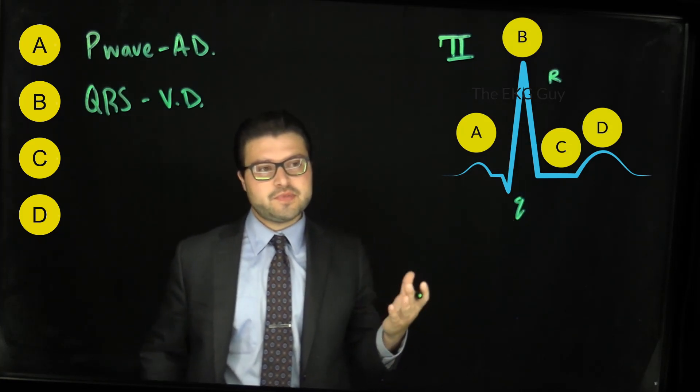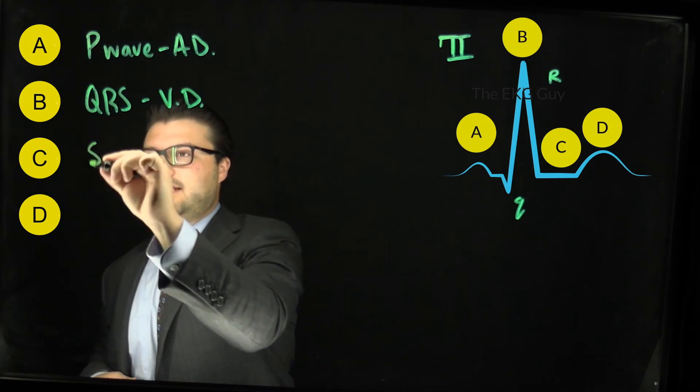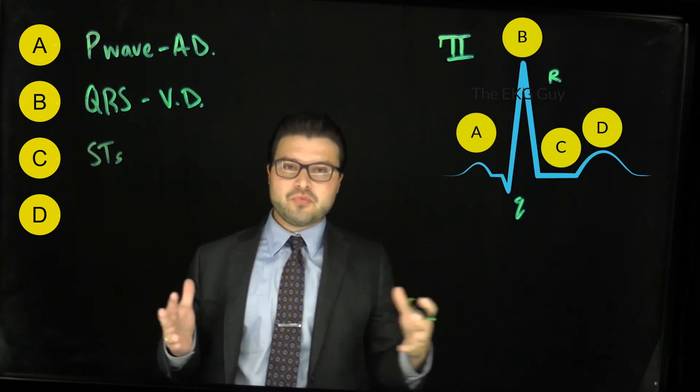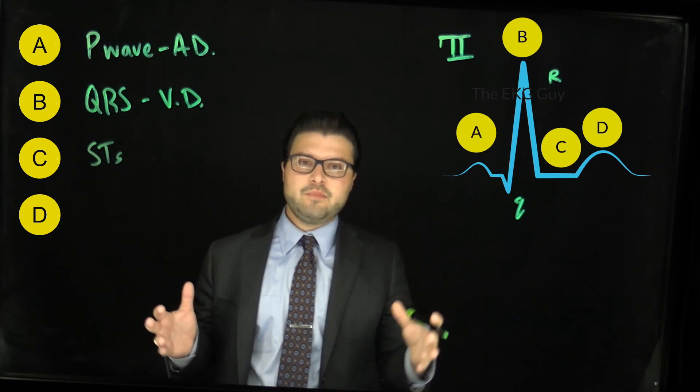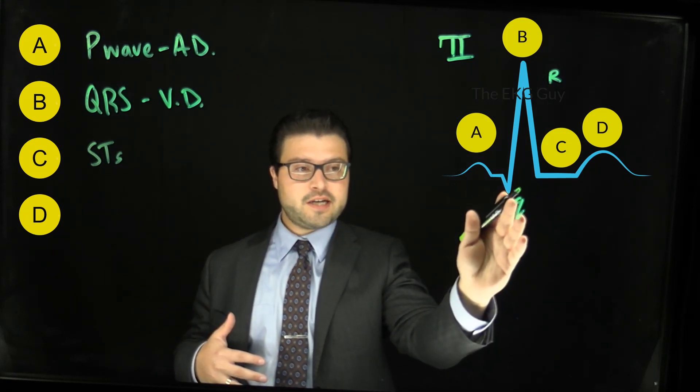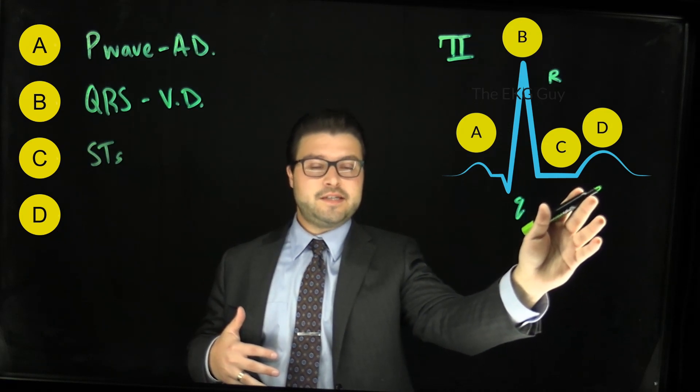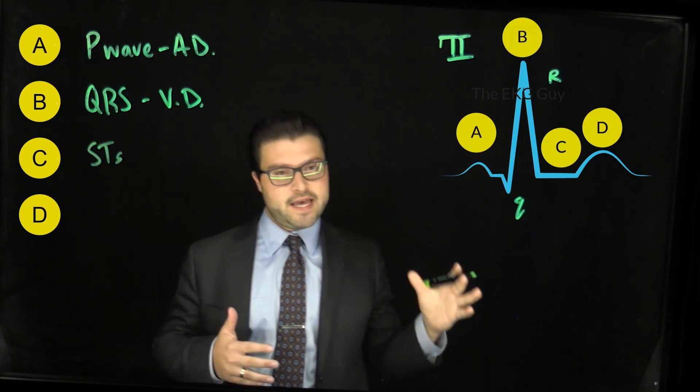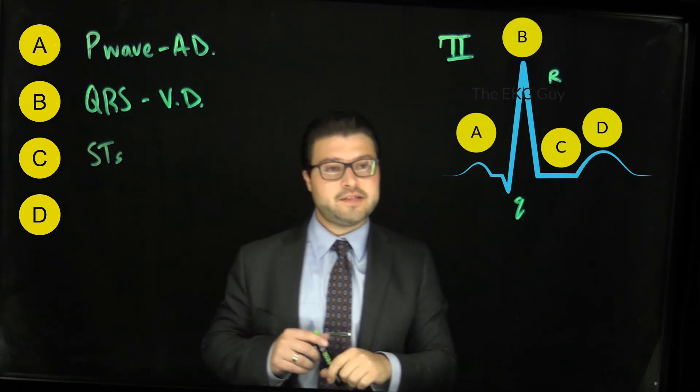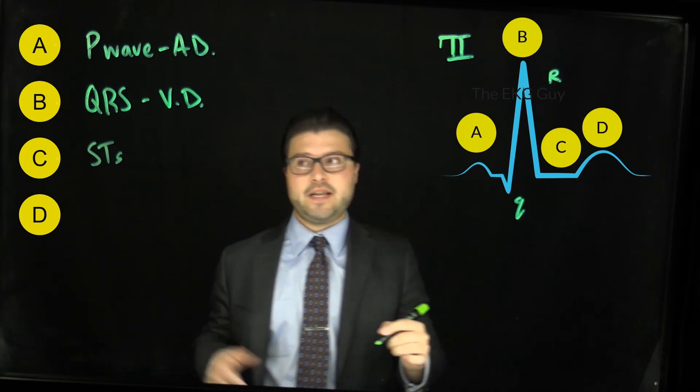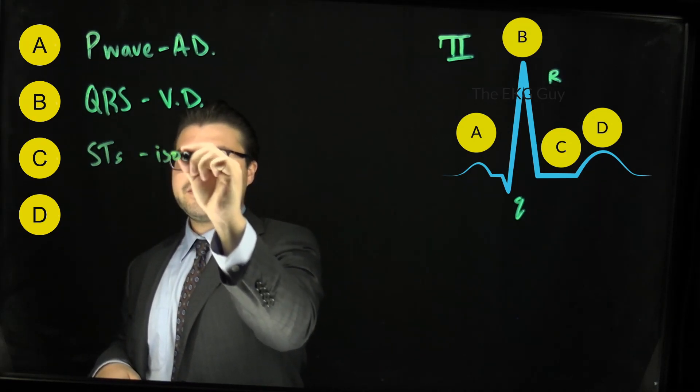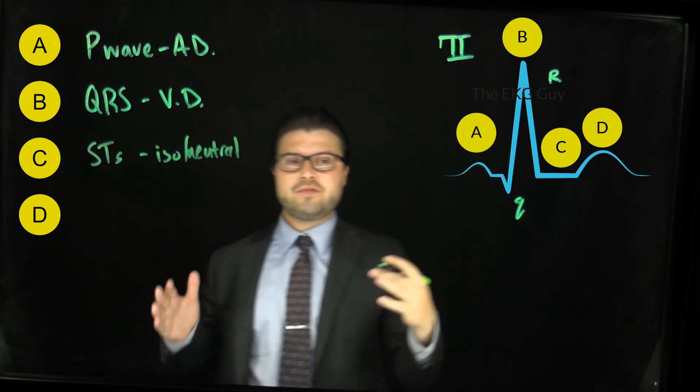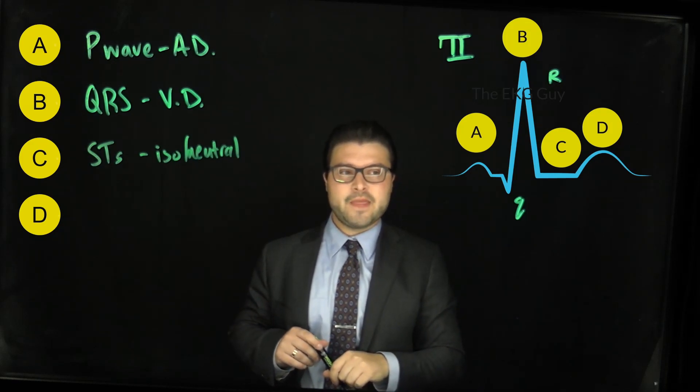Now in terms of C, C is what we consider the ST segment. The ST segment is that electrical neutral period generally at that baseline between ventricular depolarization (the QRS complex) and what we'll learn about D, the T wave (ventricular repolarization). Now in C you start to get the end of ventricular depolarization and some components of ventricular repolarization beginning, but in general let's just call this the isoelectric or the neutral period.